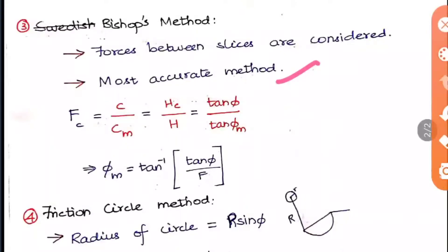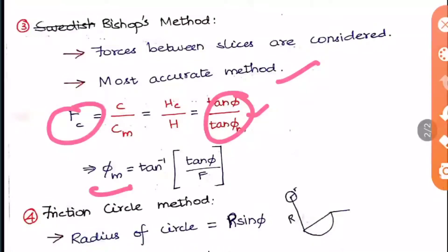The factor of safety F_c is given as c / c_m, where c is cohesion and c_m is mobilized cohesion. It is also equal to h_c / h, where h_c is critical height and h is the actual height of the slope, and equal to tan φ / tan φ_m, where φ_m is the mobilized internal friction. From this, φ_m = tan⁻¹(tan φ / F).